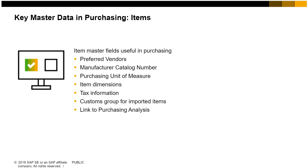The header of the item master data record contains general information about the item, including a unique ID number assigned by the user, a description including a description in a foreign language, and settings to determine the type of the item, the group it belongs to, and the price in the selected price list. Checkboxes on the right indicate whether the item is kept in inventory and whether it is offered for sale or purchase. In many cases both apply. The general tab of the item master data window holds information about the manufacturer of the item, additional identifiers, shipping methods, and SU method.